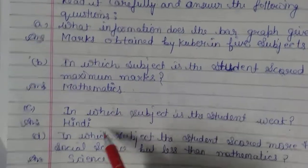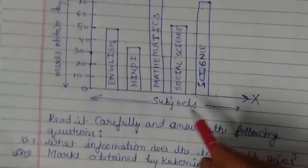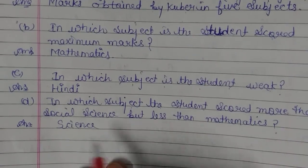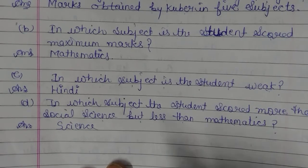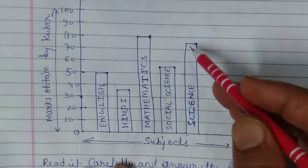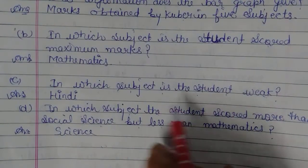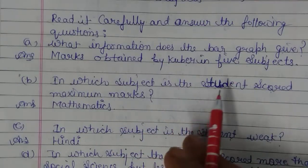In which subject is the student weakest? The bar graph is shortest for Hindi, so the answer is Hindi. In which subject did the student score more than Social Science but less than Mathematics? Science has more marks than Social Science (55) but fewer than Mathematics (80), so the answer is Science. You have to make all these bar graphs on graph paper and answer the questions in the lining portion.